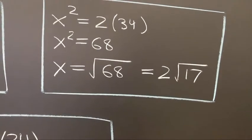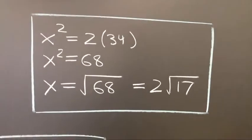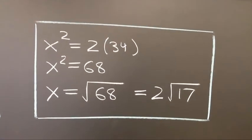And the square root of 4 is 2. So simplest radical form, x is 2 square root of 17.